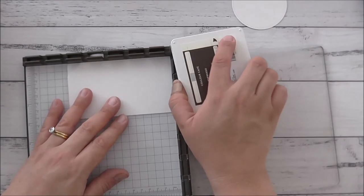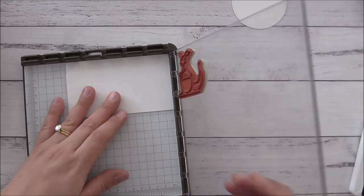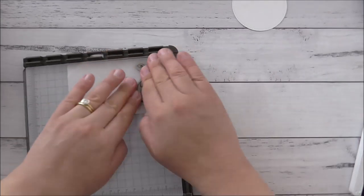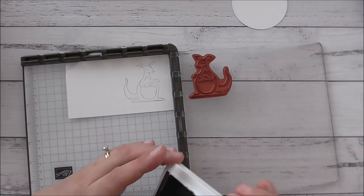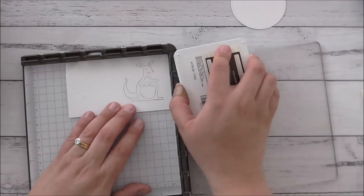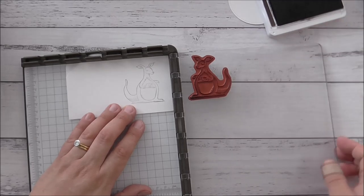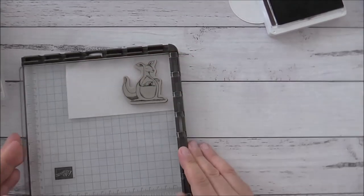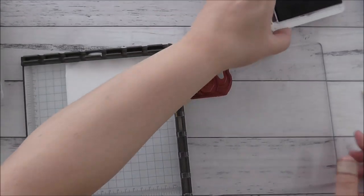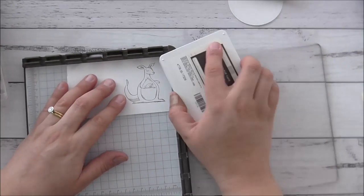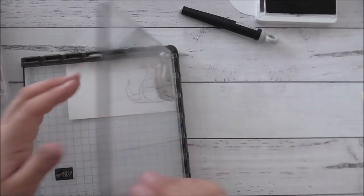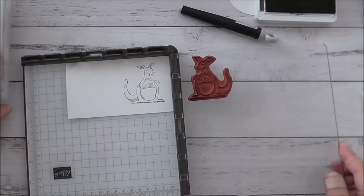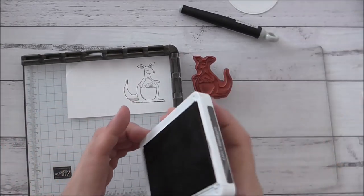So I'm using Early Espresso. I'm going to ink up the kangaroo. I'm going to ink that up again because it's very light. I don't know why this ink is so light. Looks like I'll have to get some re-inkers.